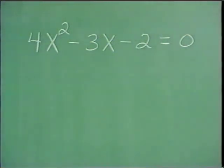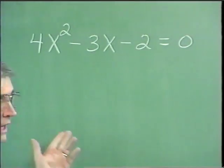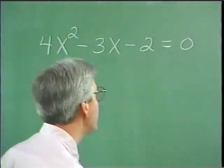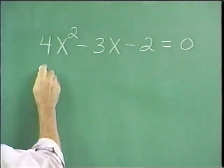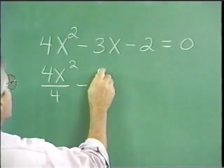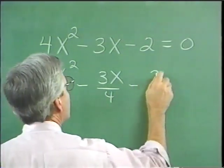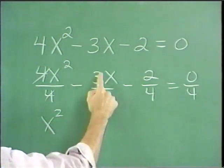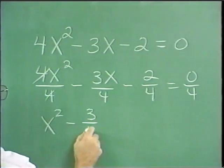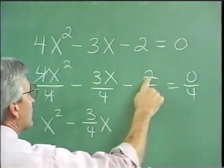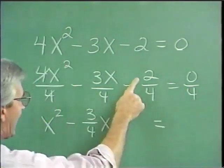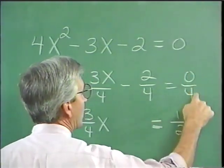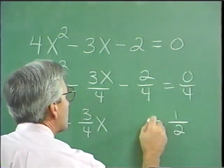Here's another example with a leading coefficient other than 1. Our first priority is to create a leading coefficient of 1 by dividing throughout by 4. So 4x squared over 4 is x squared, minus 3x over 4 gives minus 3 fourths x, and minus 2 fourths is 1 half, thrown to the right side. Zero over 4 is simply 0 and it's gone. Now we're ready to complete the square.